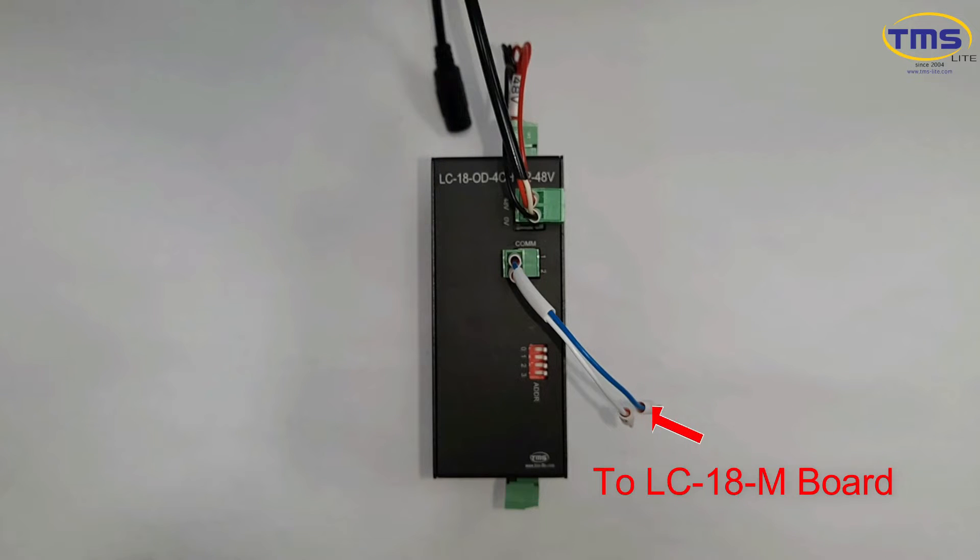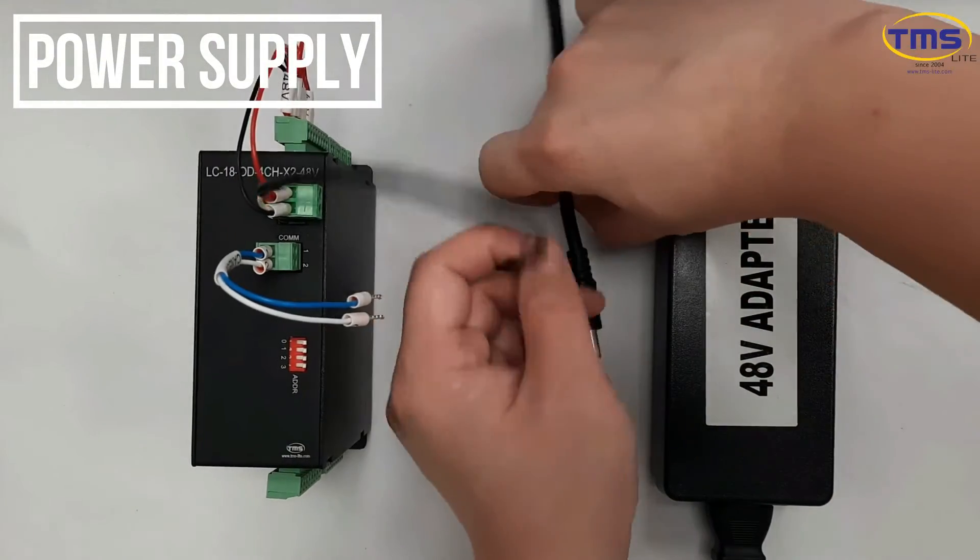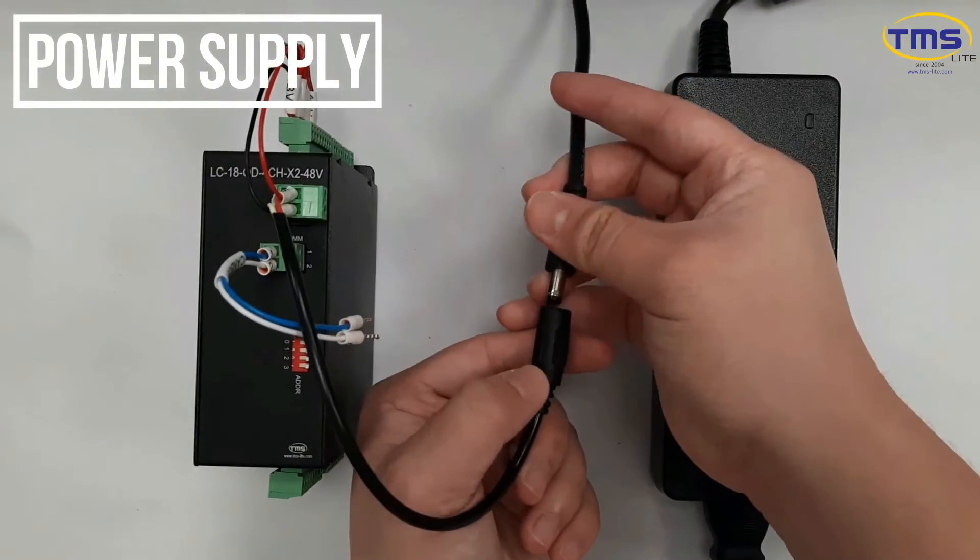Connect the canvas wire to the LC18 master. Then connect the power supply to the controller.